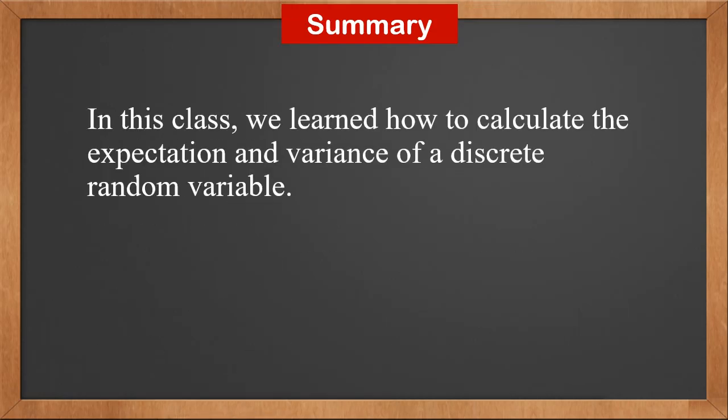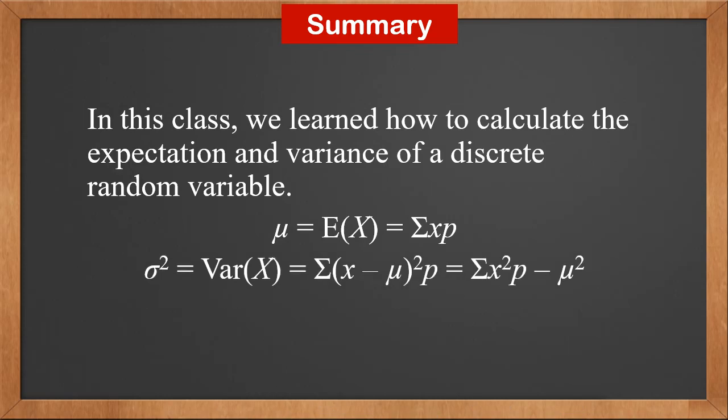In this class, we learned how to calculate the expectation and variance of a discrete random variable. Expectation is Σxp. Variance is either Σ(x - μ)²p or Σx²p - μ².